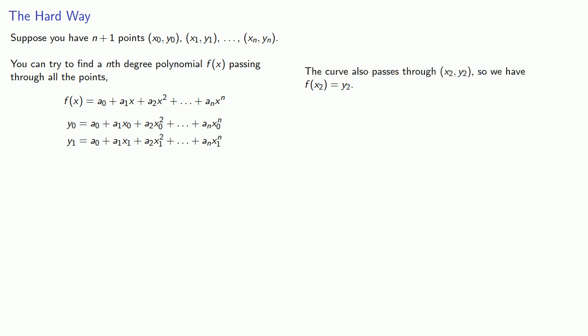But wait, there's more. The curve also passes through (x2, y2). And so we have f(x2) equals y2. And this gives us a third equation with n+1 unknowns.